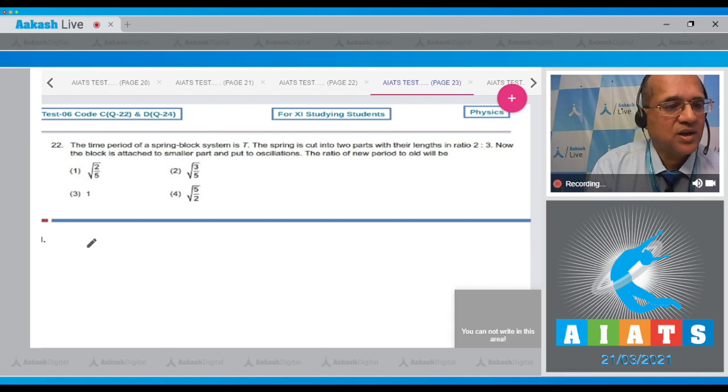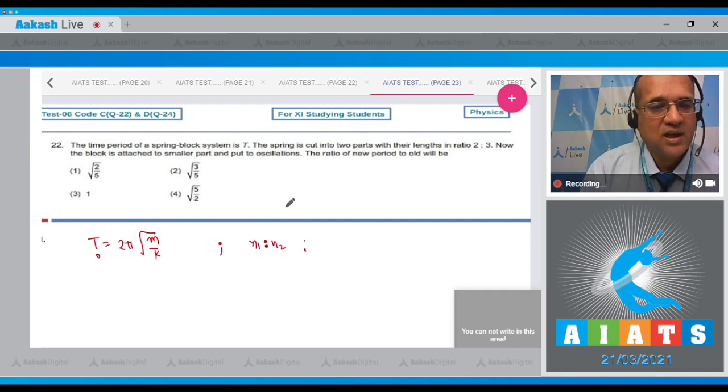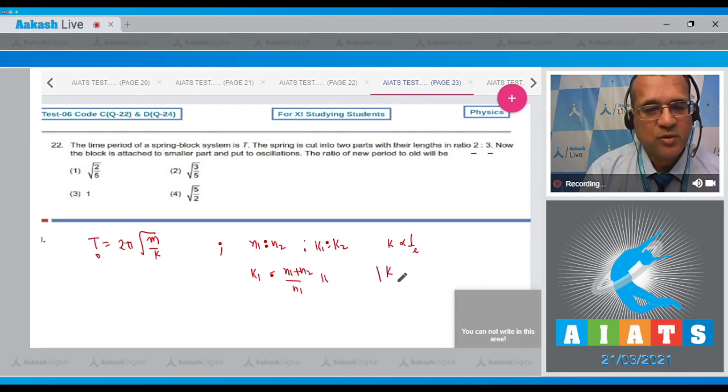Now, dear student, in the case of the old system, this is equal to 2 pi square root of m by k. Now, if any spring is cut in the ratio n1 to n2, then the spring constant is inversely proportional to the length.